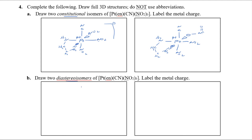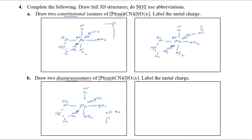For diastereomers, we have the same connectivity but different spatial arrangement. Draw the same starting compound. When three identical ligands are all 90° apart and occupy a triangular face of the octahedron, that is the facial (fac) isomer. Don't forget the 4+ charge on platinum. The fac isomer has all three equivalent ligands on one face of the octahedron.